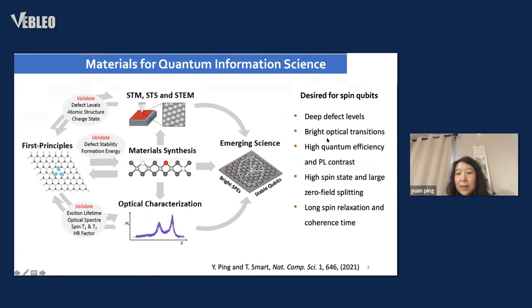From the material point of view, we would like to design spin qubits which are ideal for quantum information science applications. The criteria are: they need deep levels and bright optical transitions so you can address them with photons, high quantum efficiency and PL contrast, high spin state with large zero field splitting which guarantees you have a spin state to manipulate, and long spin lifetime.